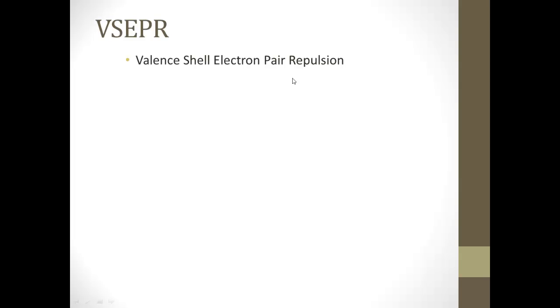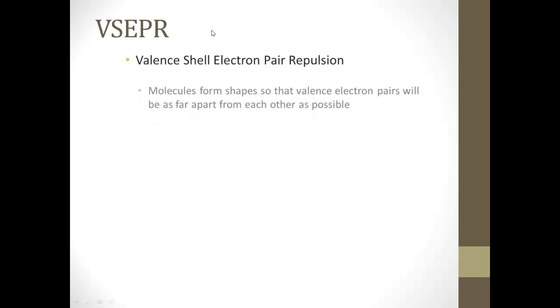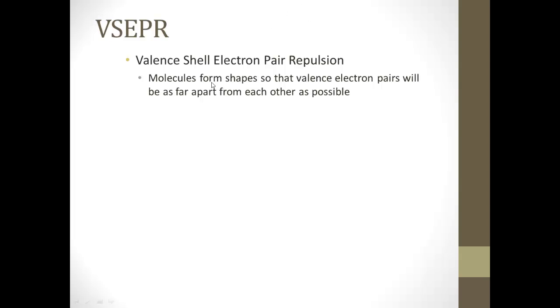That thing is VSEPR, which is valence shell electron pair repulsion. That just means that molecules form shapes so that valence electron pairs will be as far apart from each other as possible.